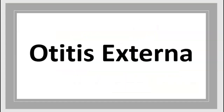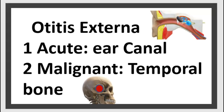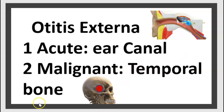Today's topic is about otitis externa. There are two sections in this chapter. The first one is acute otitis externa, regarding the ear canal, and the malignant form is concerned with the temporal bone.